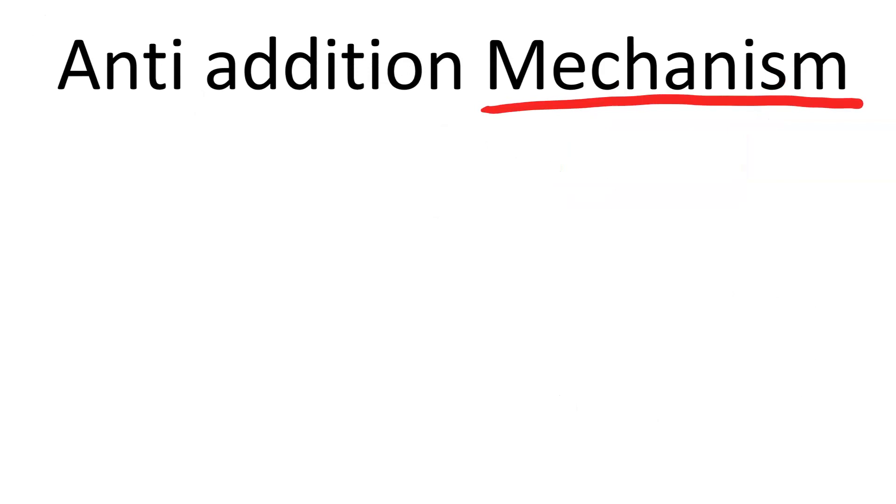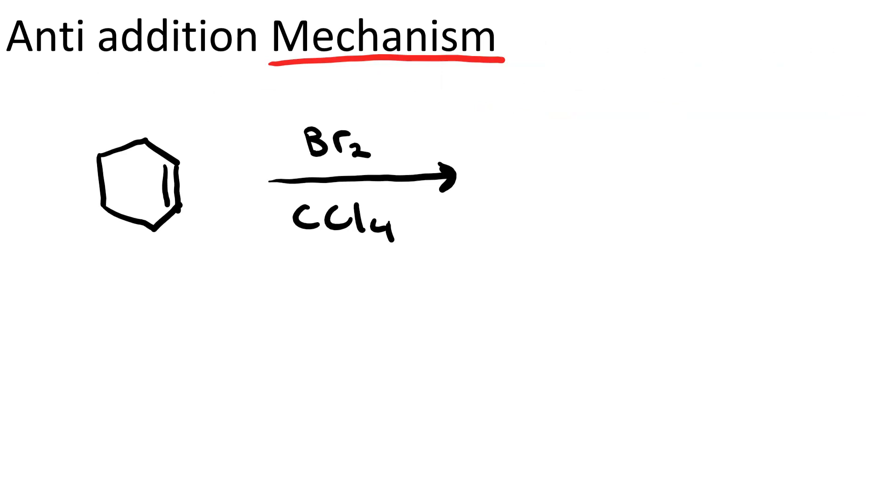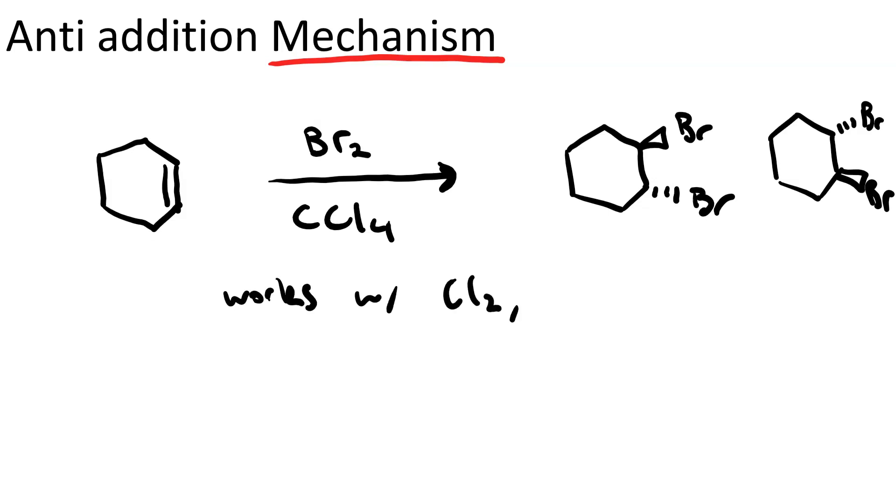So let's look at the mechanism for anti-addition and why we see the outcomes we do. So we know that if we treat an alkene with bromine and carbon tetrachloride, we will get the trans-1,2-dibromoalkane and its enantiomer. This also works with chlorine and iodine. So don't forget that. But let's go into the mechanism of why it happens.